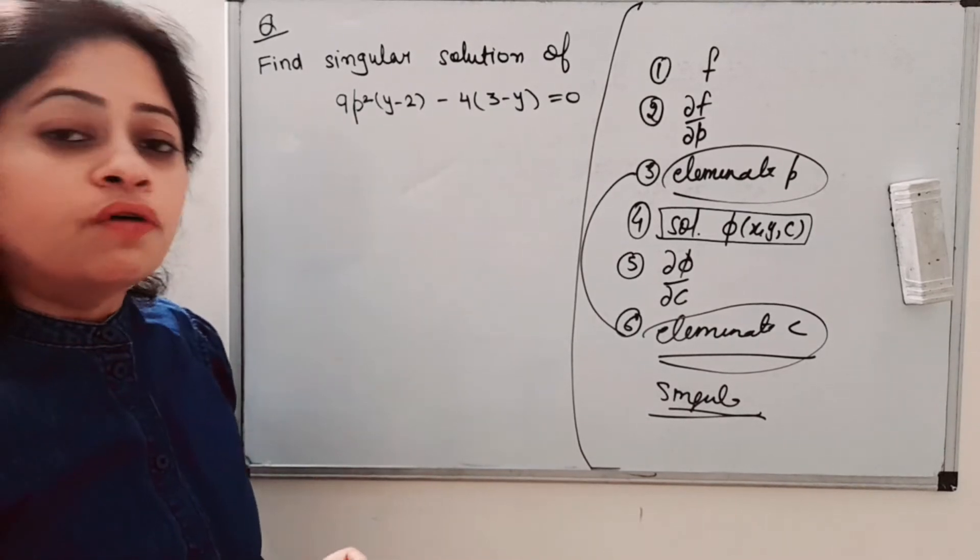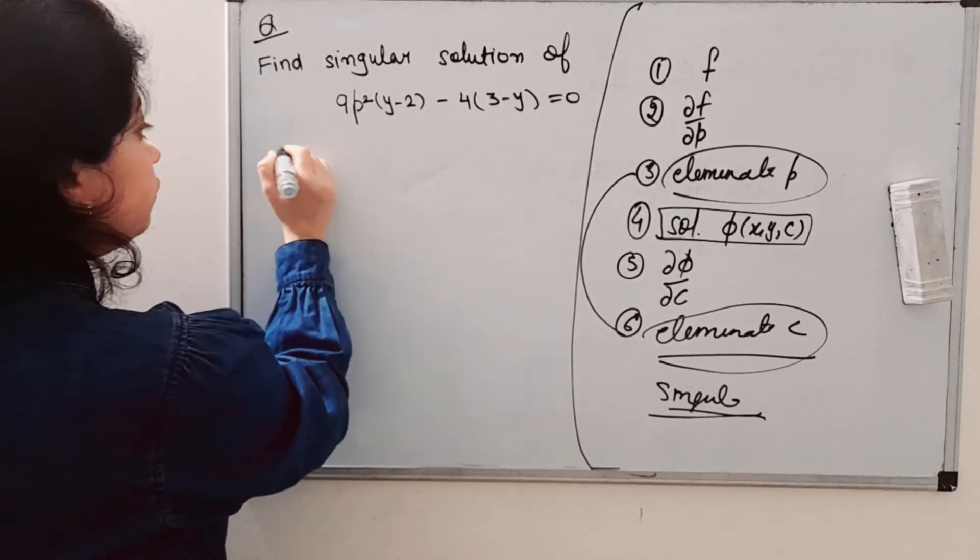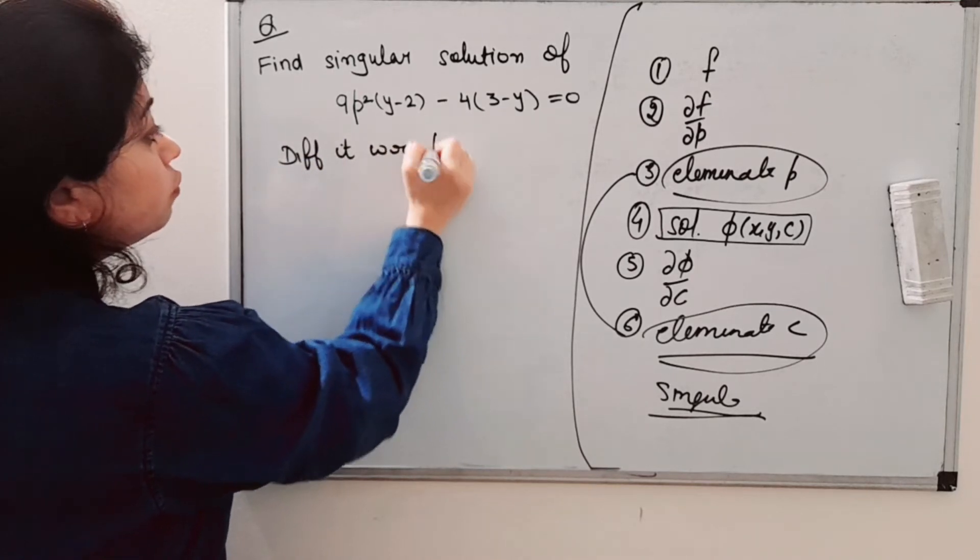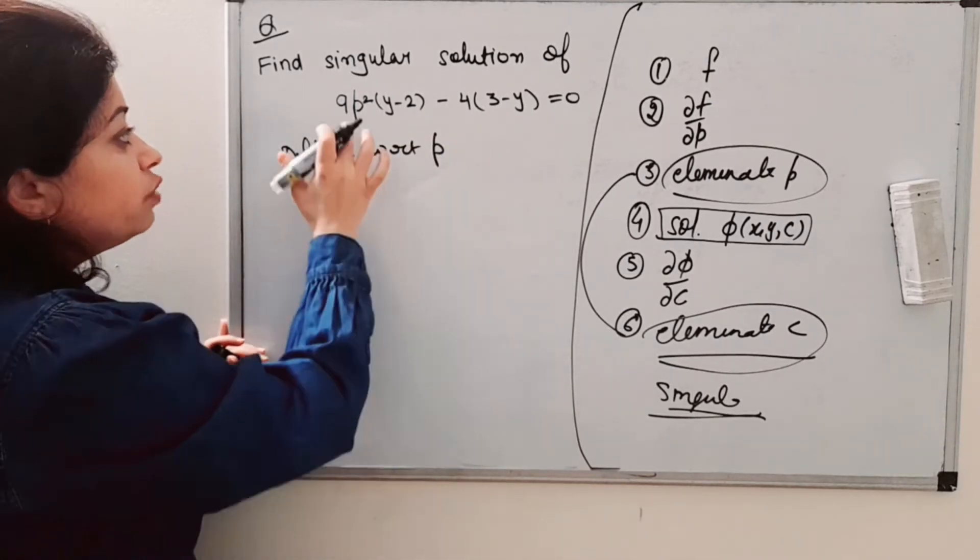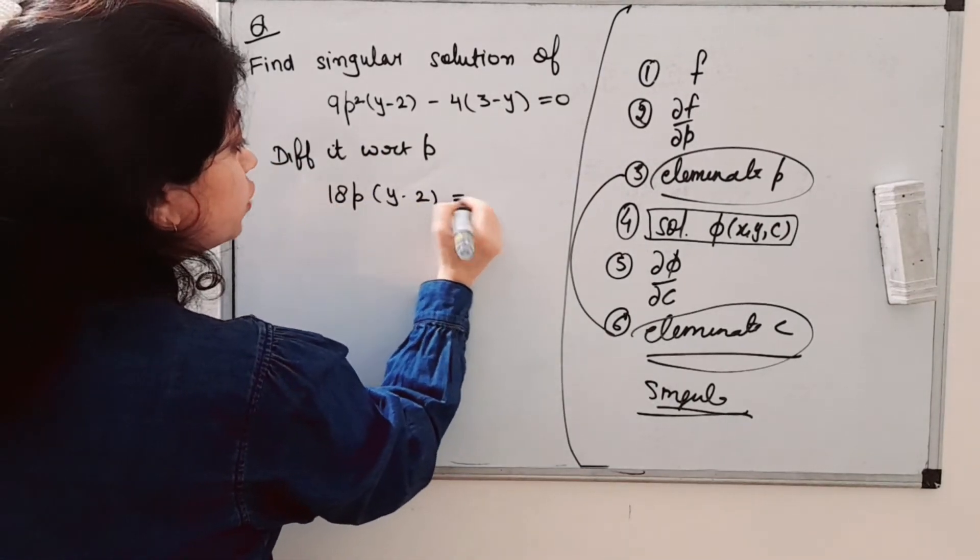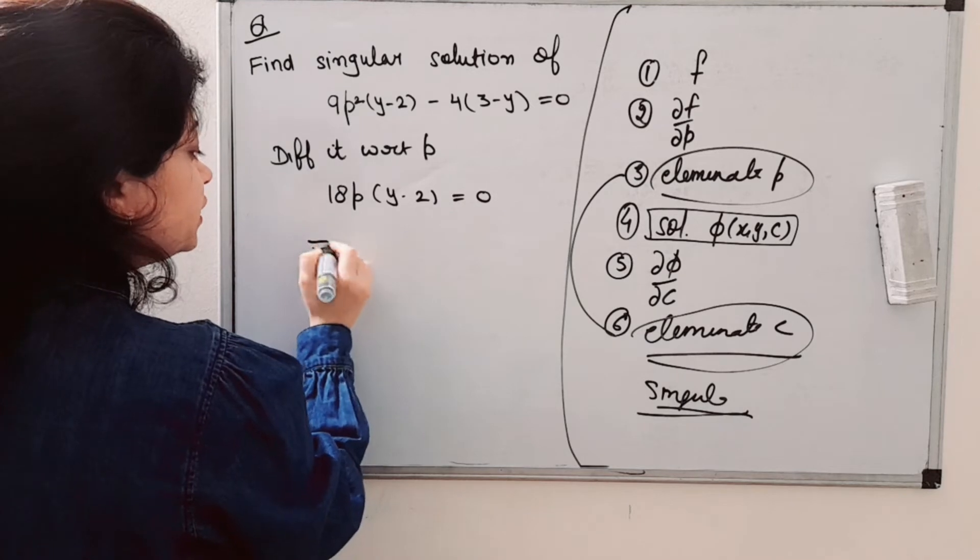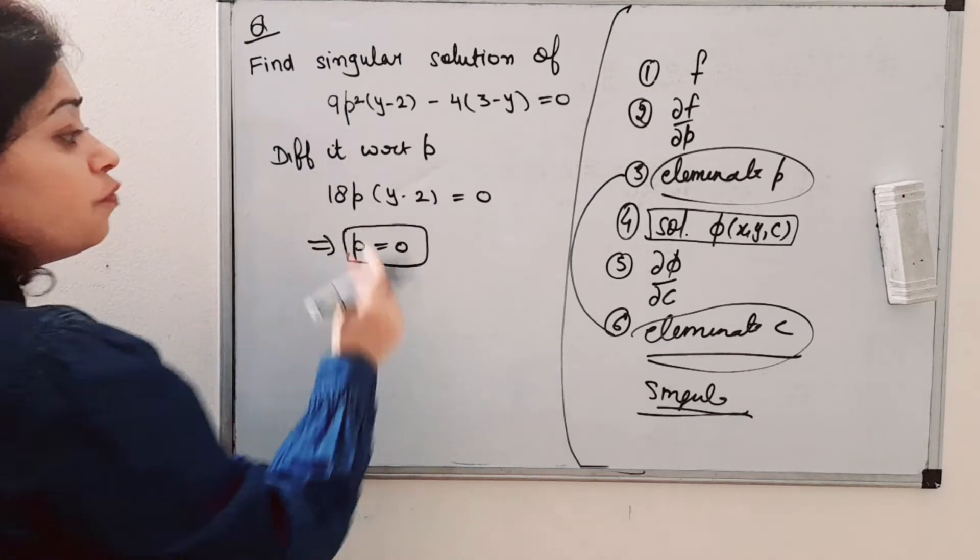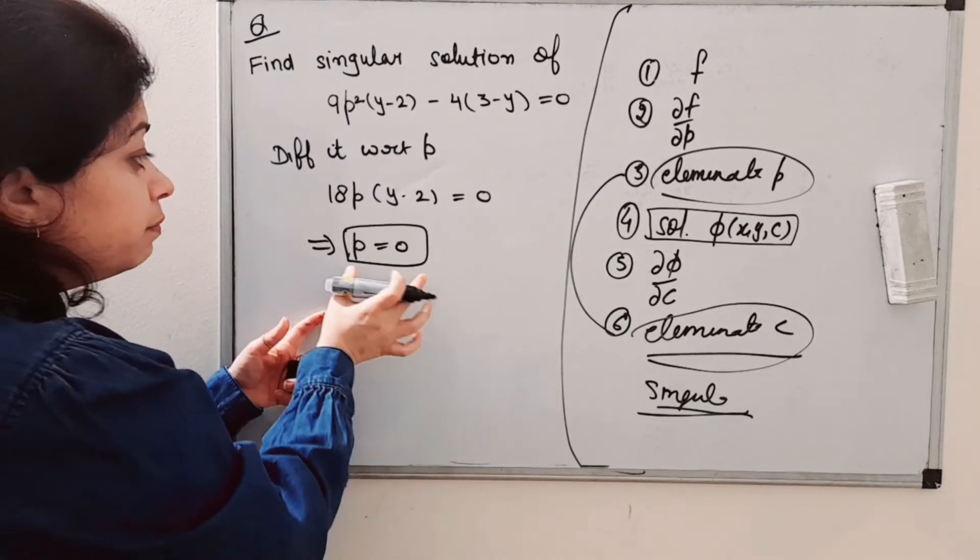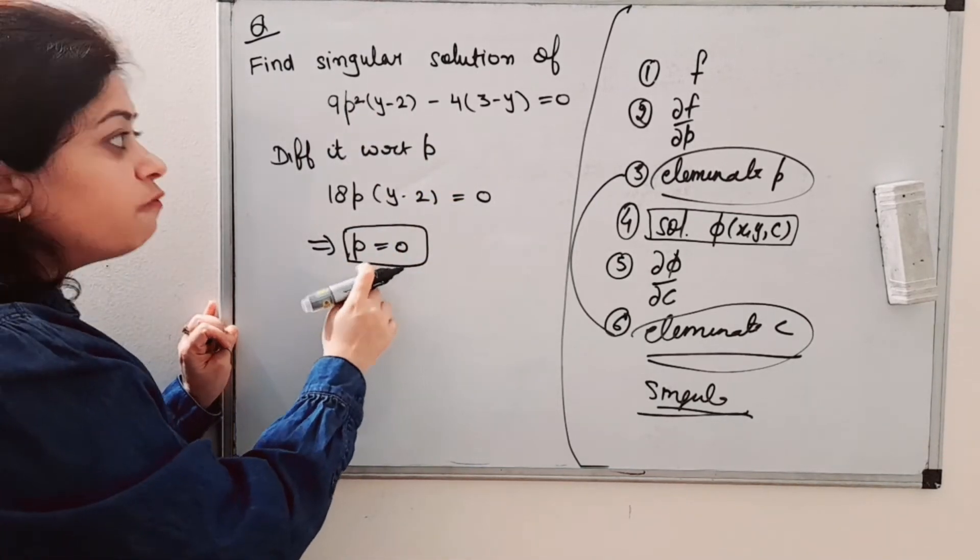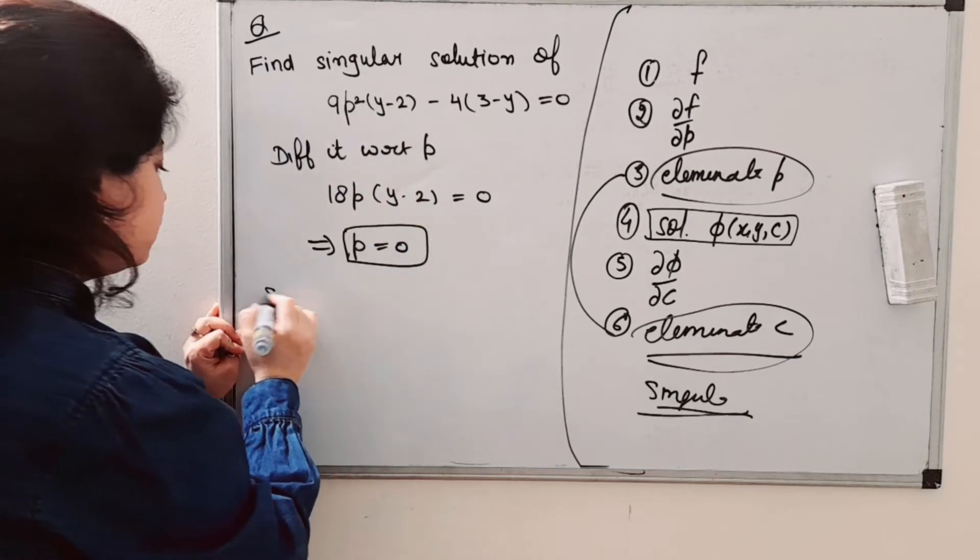Differentiate it with respect to p. What will you get? 18p(y - 2) = 0. This implies p = 0. Now we need to eliminate p between these equations, which means we will substitute the value of p.